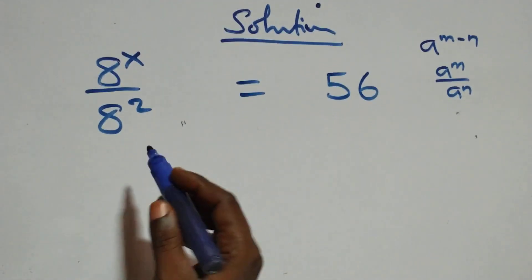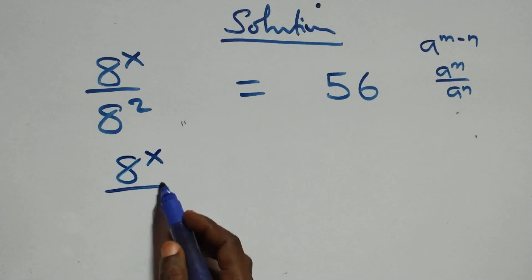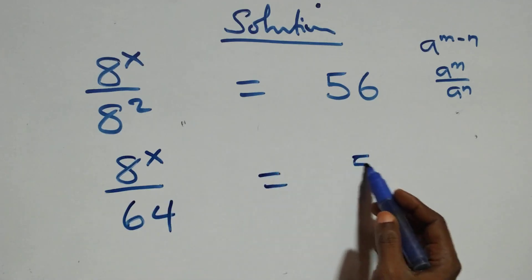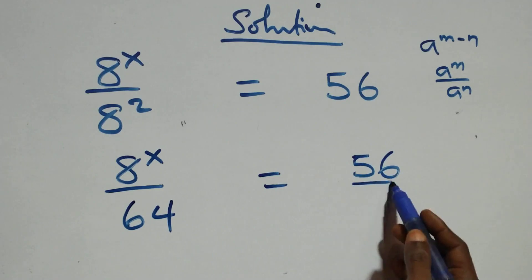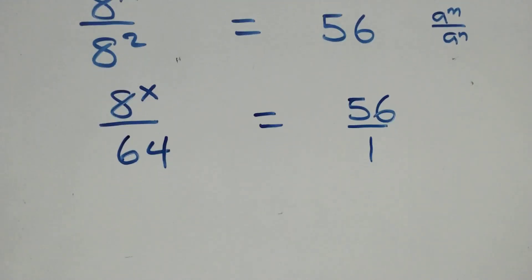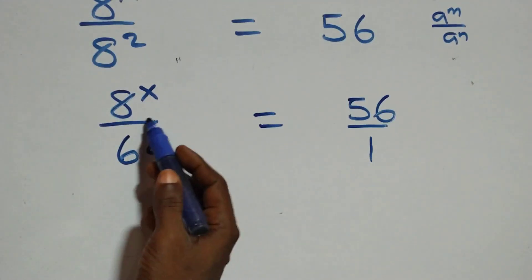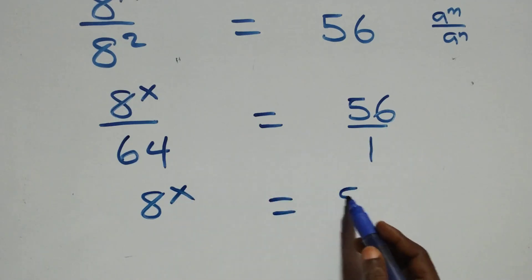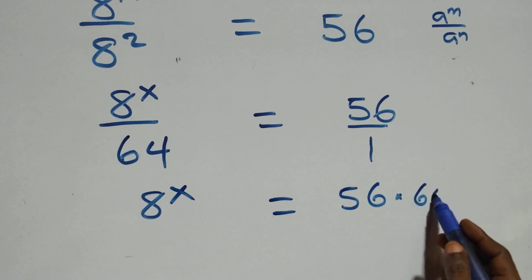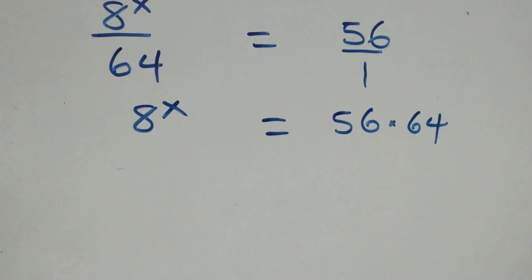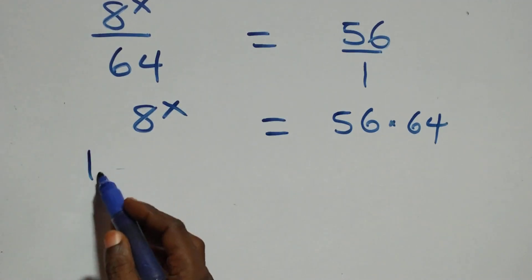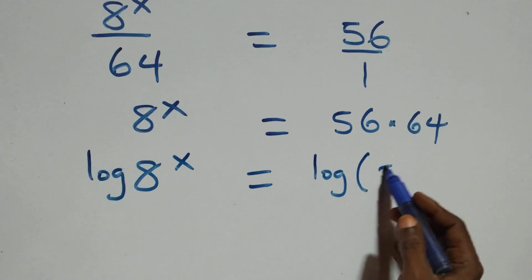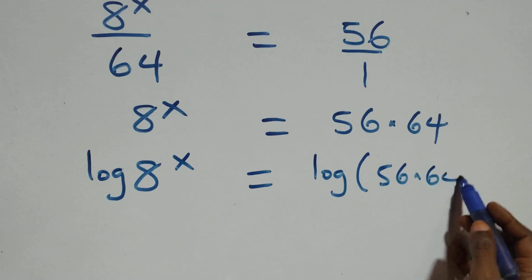We can write this as 8 raised to power x over 8 squared — 8 times 8 is 64 — equals 56, which is the same thing as 56 over 1. We cross multiply: 8 raised to power x times 1, same thing as 8 raised to power x, equals 56 times 64. The next step, we take the log on both sides: log 8 raised to power x equals log of 56 times 64.